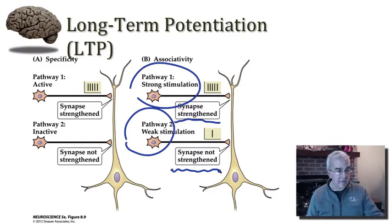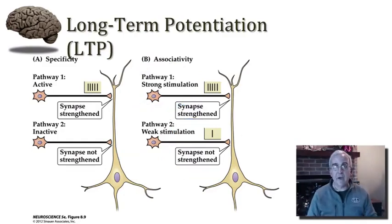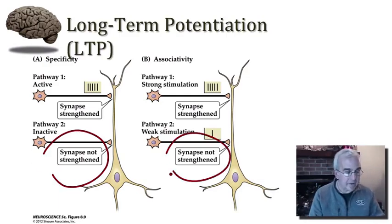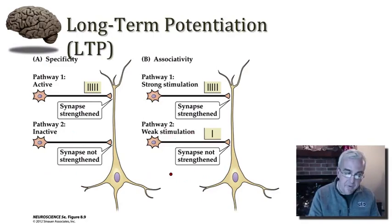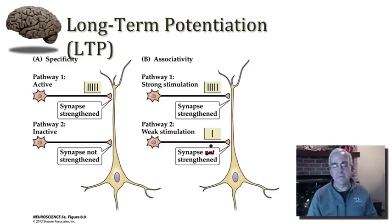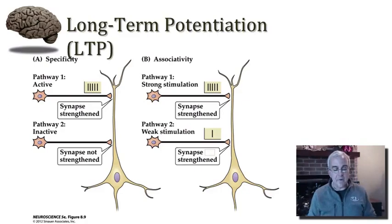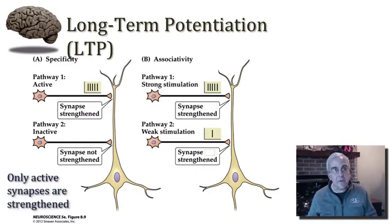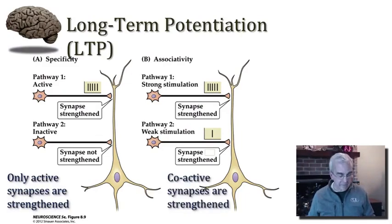I need to digress for just a moment and clear up an unfortunate error in this figure. The text from these two blocks was duplicated — that should not have been. On the right-hand side of this figure, the word 'not' should be scratched off. So in associativity, the pathway that has weak but concurrent activity can be strengthened along with the already strong pathway that was stimulated. To summarize: specificity means that only active synapses are strengthened, and associativity means that co-active synapses may be strengthened.